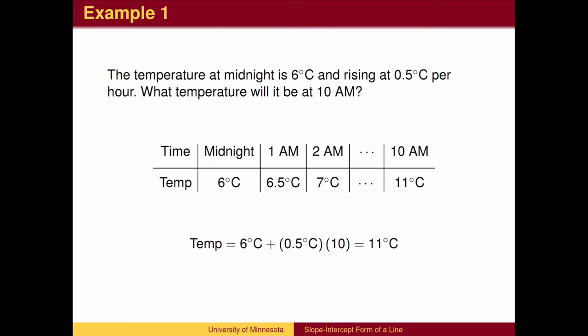Since repeated addition is multiplication, we have a natural shortcut. We begin with the initial temperature at midnight of 6 degrees. To the initial temperature, we add one-half of a degree 10 times. The temperature will go up 5 degrees from the initial temperature.